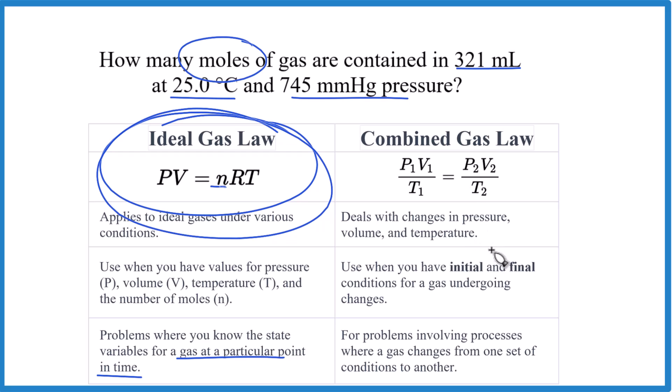So that's it. The key is you're looking at initial and final. It's going to be a combined gas law. If you have moles and only one set of conditions, that's going to be the ideal gas law. This is Dr. B looking at which law you use, ideal gas law or combined gas law, when you're solving problems in chemistry.